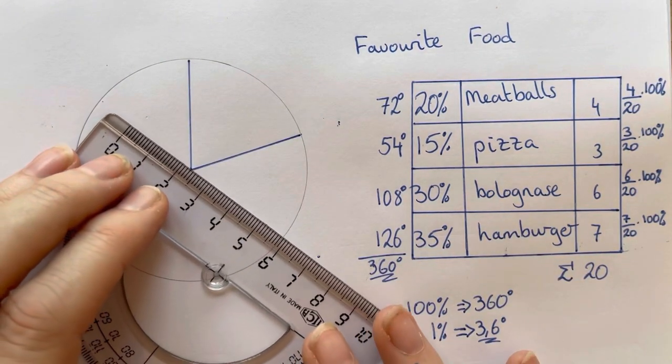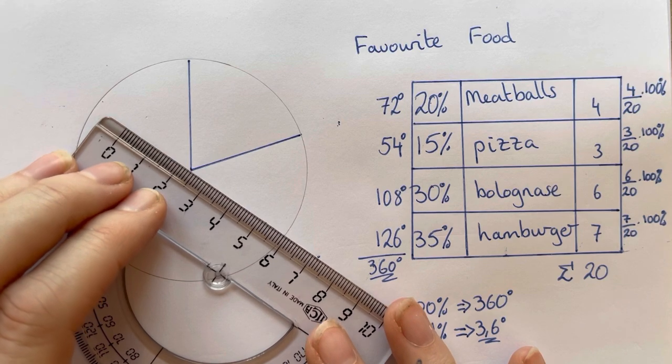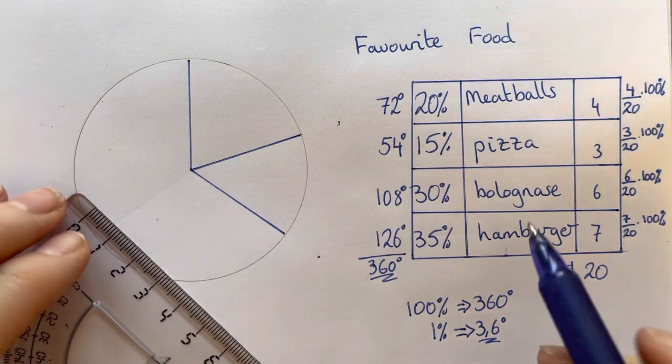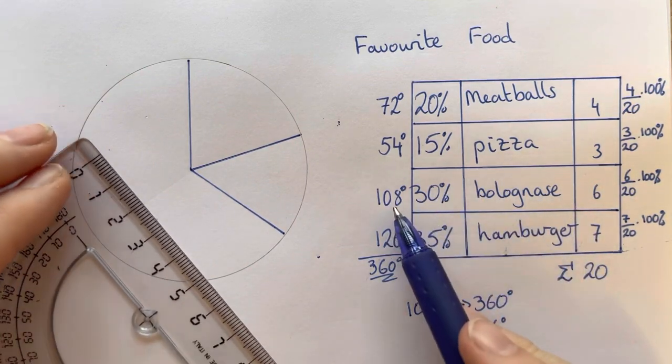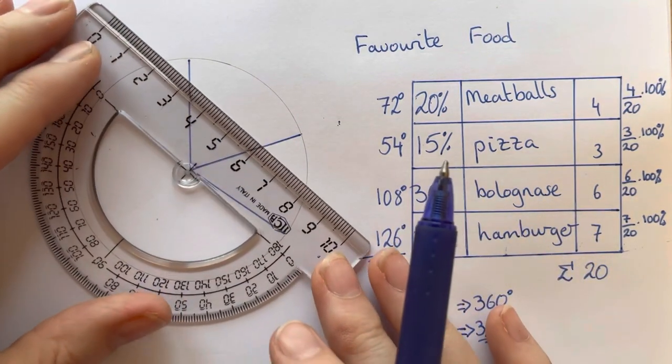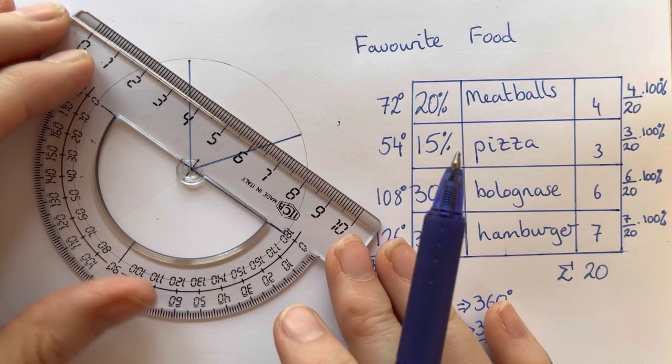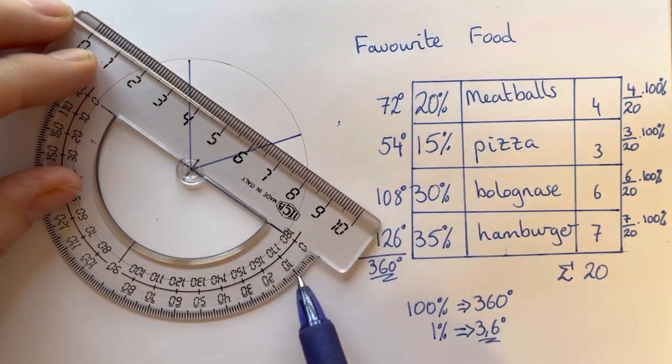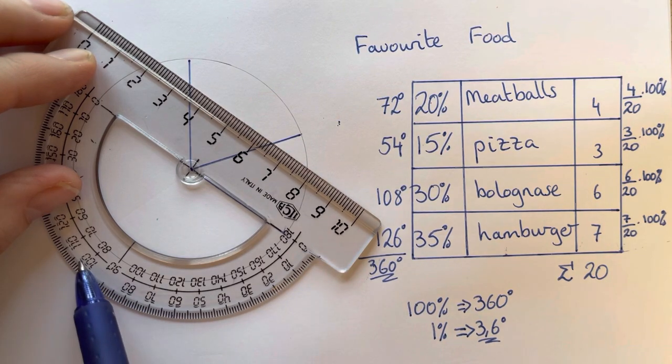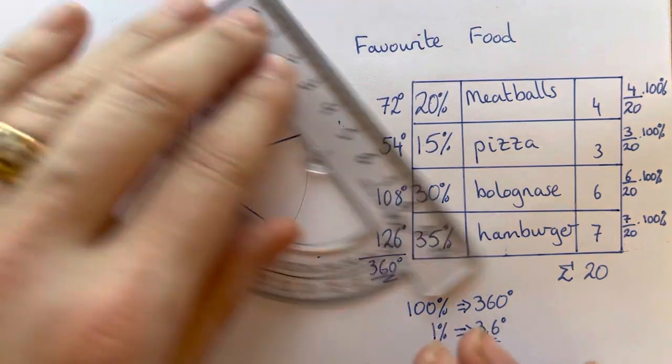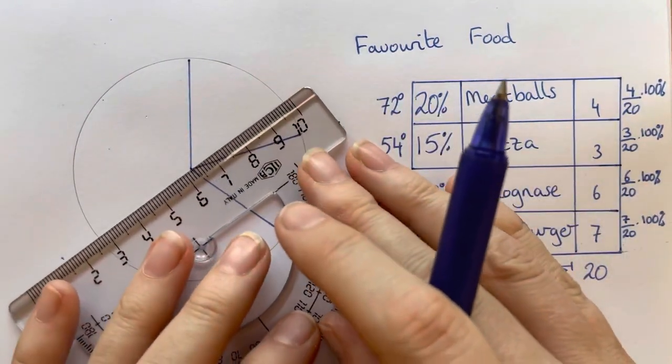And then we have pizza. From pizza we're going to bolognese, which we know is 108 degrees. So start from our middle point and we go out 20, 30, 40, 90, 100, 108 degrees, which is here, and connect our last line up.